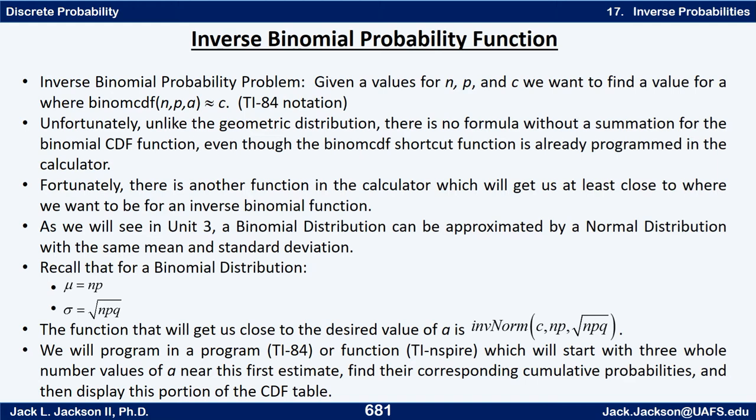Fortunately, there is another function in the calculator which will at least get us close to where we want to be for an inverse binomial function. As we will see later in unit 3, when we start talking about continuous distributions, a binomial distribution can be approximated by a normal distribution with the same mean and standard deviation. There are certain conditions when that's a better approximation than others, but we can use it as a basic approximation.